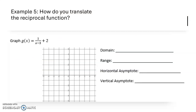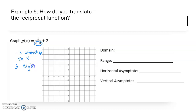If it were all just 1/x, every single graph would look exactly the same, but this is a translated reciprocal function. There is a negative 3 attached to the x, which means it's a horizontal translation — and since horizontal is 'horrible,' instead of 3 to the left, it shifts 3 to the right. So instead of a vertical asymptote at 0, I write my vertical asymptote at x equals 3.